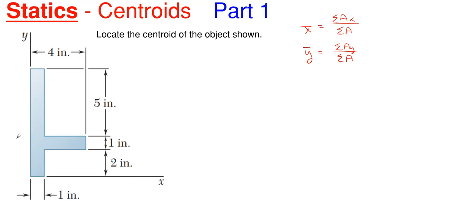Technically the name for this would be a composite shape. Whenever you have a composite shape, the first thing you want to do is split it up into individual shapes — such as individual rectangles, squares, triangles, circles — as many smaller parts as you can get it into to make your life easier.